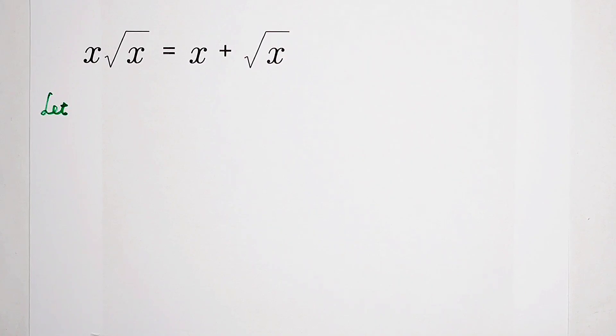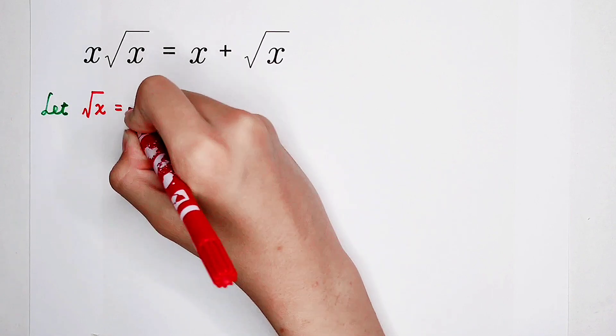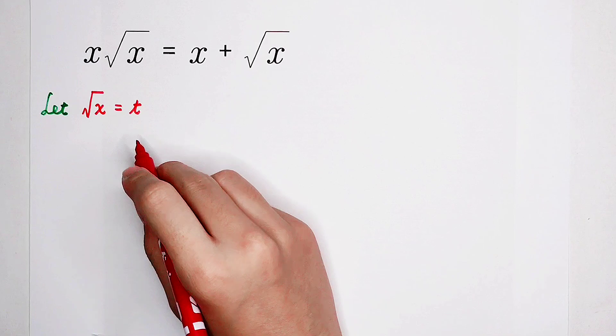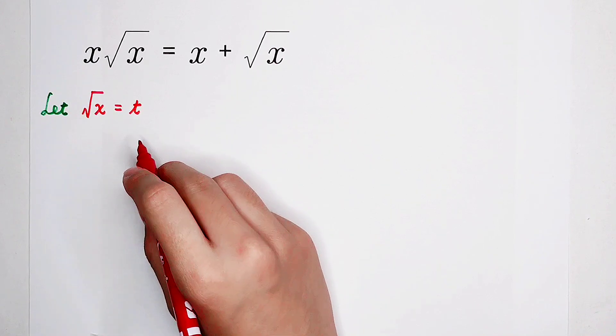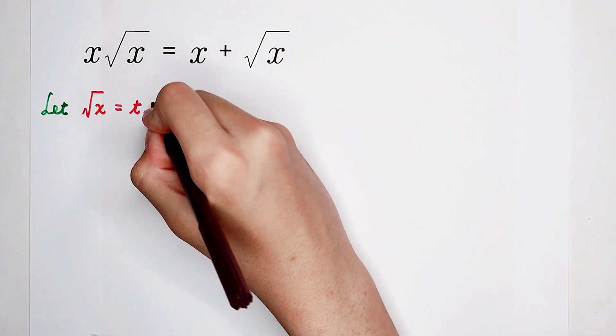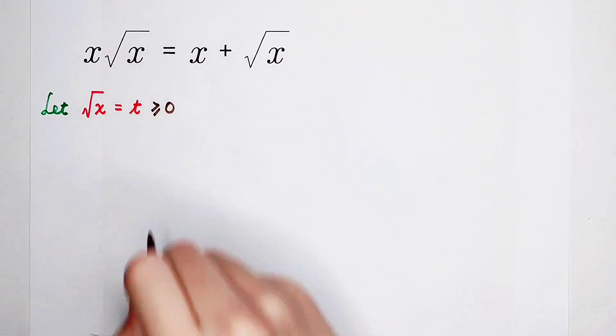We can let the square root of x be equal to t. We know that square root of x is equal to t. What's the range of t? The range of t is only non-negative. So that's okay. t is greater than or equal to zero.